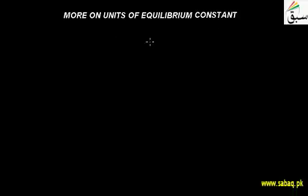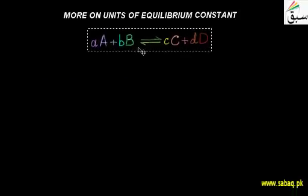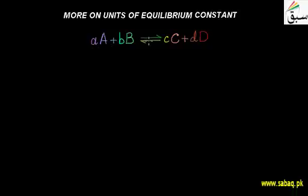Students, we will see units of equilibrium constant and some equations. We will see chemical reactions and equilibrium constant units. We have derived the equilibrium constant using the law of mass action — we took a hypothetical reversible equation where A moles of A react with B moles of B in a reversible reaction to give C moles of C and D moles of D.